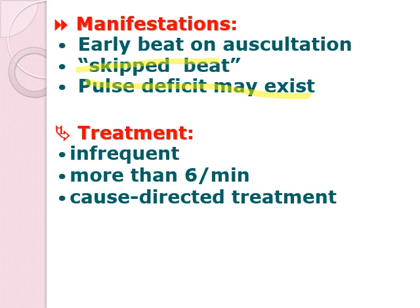For treatment, treatment is usually not done if the PAC is infrequent. However, if you are seeing more than 6 PACs in a 1-minute strip, you need to take note that this may be a signal of worsening disease or onset of more dangerous dysrhythmia, which may be progressing towards atrial fibrillation. Whatever the cause is, that will be treated accordingly. For example, if your patient has hypokalemia, you need to give potassium supplementation. If your patient has a hypermetabolic state such as hyperthyroidism, you need to give drugs which can halt the production of thyroid hormones. Treatment is geared towards causation.